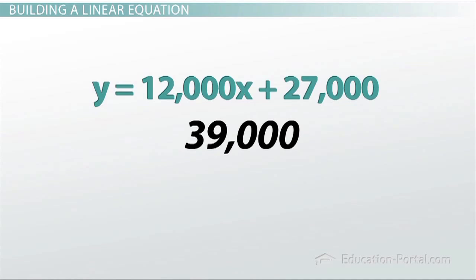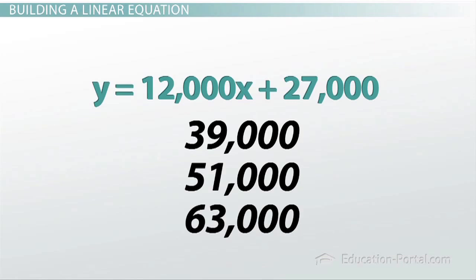So after year 1, it had 39,000. Then after year 2, it had 51,000. Then after year 3, it had 63,000, and so on.